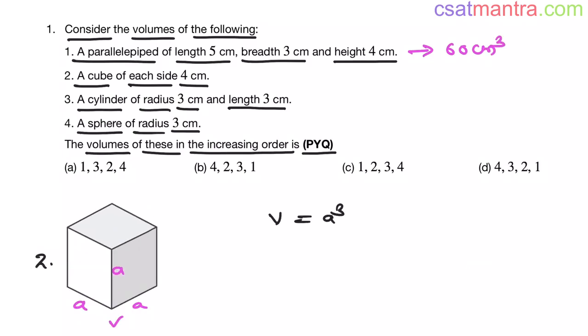This is a cube of side length A. Volume is equal to A cube. Lengths and breadth and heights are equal. Volume is 4 cube. This is 64 cm cube.